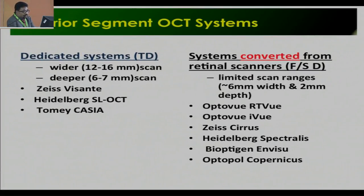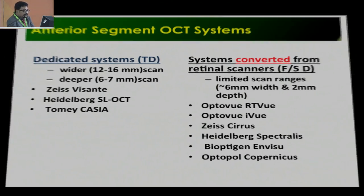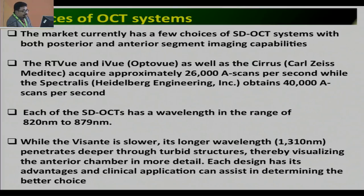Some machines are dedicated for the anterior segment; some machines cover both anterior as well as posterior. The market currently has a few choices of spectral domain OCT systems with both posterior and anterior segment imaging capabilities. The RT-View and i-View, that is Octo-View, as well as the Cirrus by Carl Zeiss Meditec, acquire approximately 26,000 scans per second, while the Spectralis by Heidelberg obtains 40,000 scans per second.